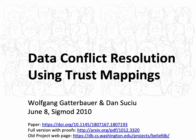This is a recorded version of a talk presented at SIGMO 2010. My name is Wolfgang Gatterbauer and this is joint work with Dan Sutro. The focus of this talk is a principle solution to automatic conflict resolution in community databases if we have trust mappings.